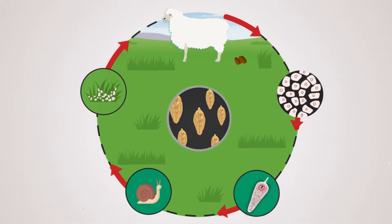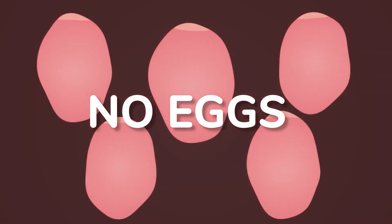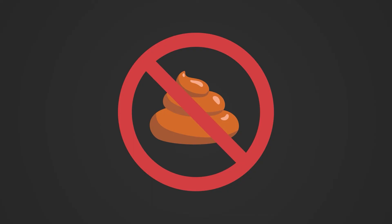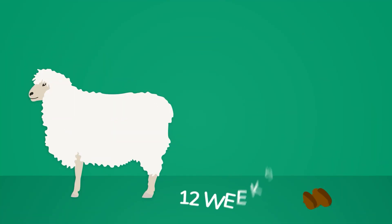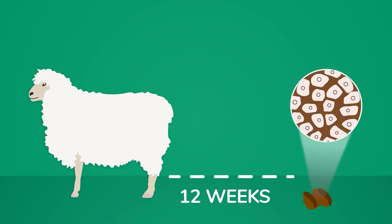Because only the adult liver fluke lay eggs, it is not possible to use fecal egg counts to identify early liver fluke infection. There is a long period of time — up to 12 weeks — from the time when a sheep first picks up infective liver fluke larvae from pasture to the time when liver fluke eggs will start appearing in the feces.